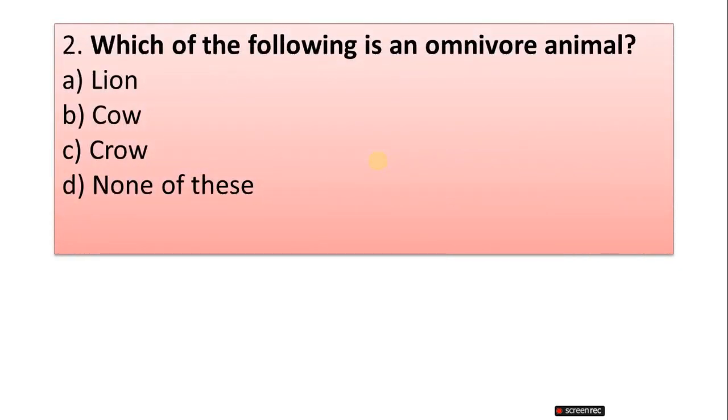Question 2: Which of the following is an omnivore animal? A. Lion, B. Cow, C. Crow, D. None of these.